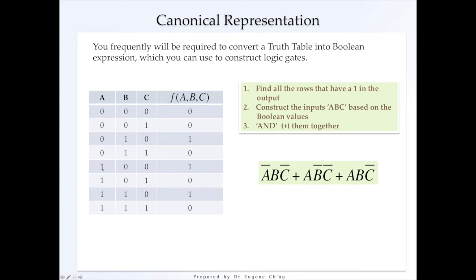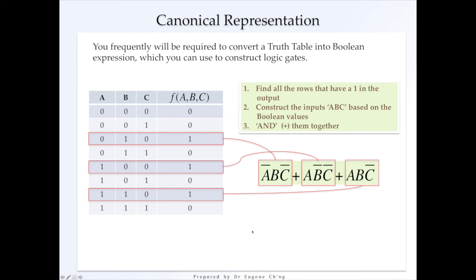In this output, we have an A, NOT B, NOT C. That's that one. And then we have an A, B, and a NOT C. And we have that one. So there's the first one, the second one, and the third one.